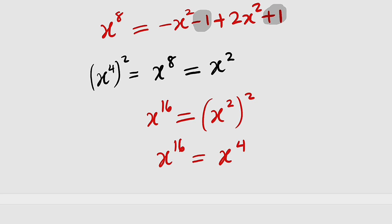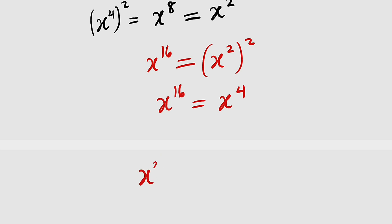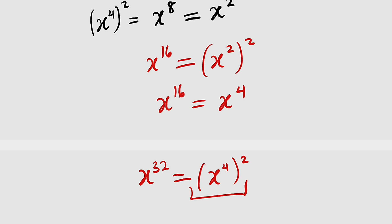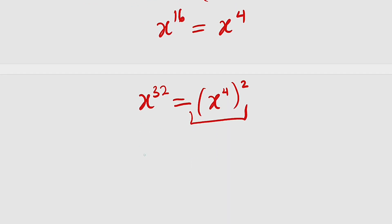And lastly, because our main goal is to get x to the power of 32, we can square both sides from here. Therefore, x to the power of 32 — since 16 plus 16 is 32 — equals x to the power of 4 also to the power of 2. But we have already simplified x to the power of 4 all squared as just x squared. Therefore, x to the power of 32 is equal to x squared.